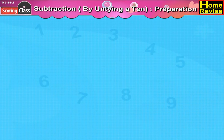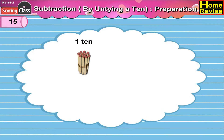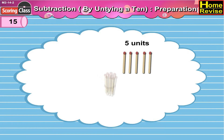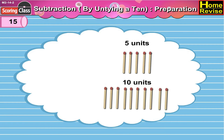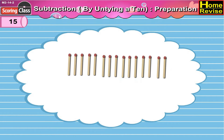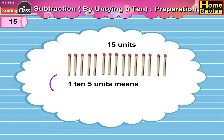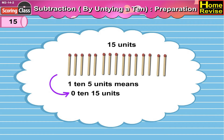Fifteen means one ten, five units. If we untie one ten, then we'll get ten units. So now we have zero tens, fifteen units. So one ten, five units means zero tens, fifteen units.